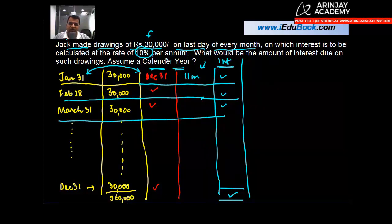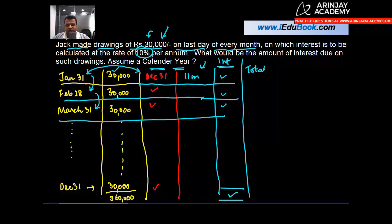But there is a short method of doing the same thing, and that is applicable when two conditions are satisfied: one, the drawings amount which you make is fixed, and the time gap between two drawings, so let's say between these two drawings from January 31 to February 28 there's a time gap of one month. Similarly between February 28 and March 31 there's a time gap of one month. So when the drawings amount are fixed, when the time gap between two drawings are fixed, then you can also calculate the total interest on drawings.